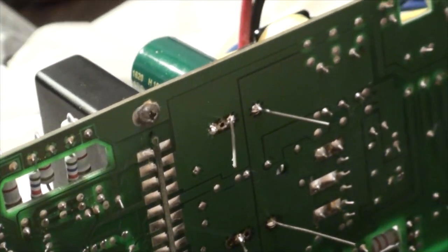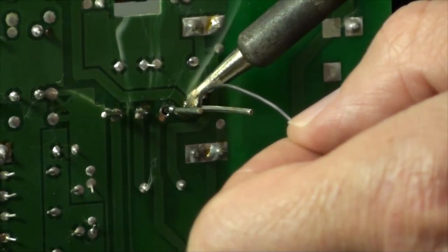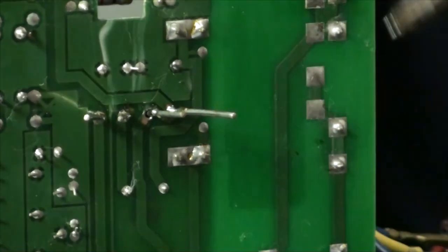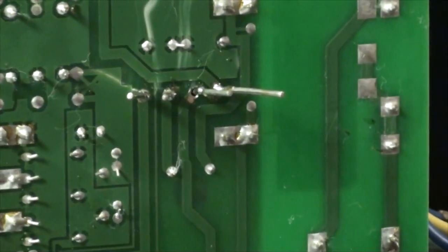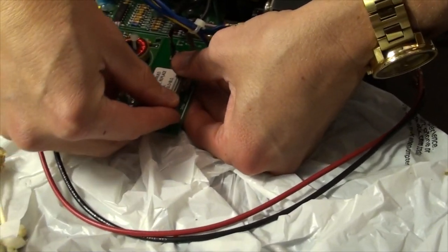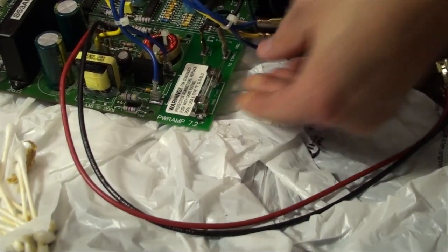Solder in your new diode bridge rectifier, making sure to keep the positive end of the bridge on the positive end of the PCB. If need be, install a new fuse.